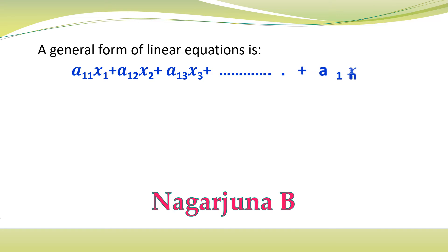General form of linear equation is a11x1 plus a12x2 plus a13x3 plus etc., up to a1nxn is equal to b2.